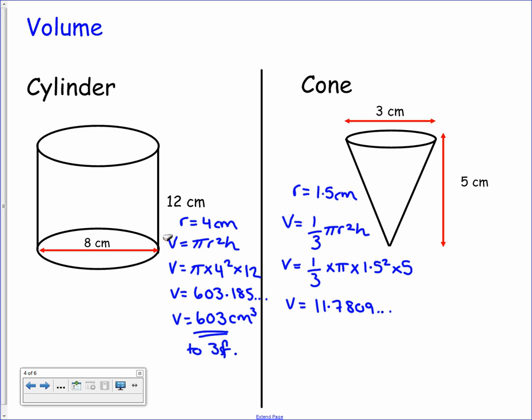Again we've got a decimal value so we need to round it. Let's go for three significant figures again. So that will round up to give you 11.8 cubic centimeters to three significant figures.